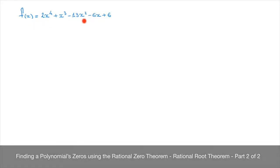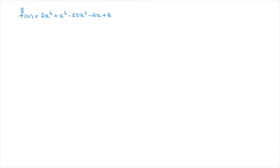Say we're given the polynomial function f(x) = 2x⁴ + x³ - 13x² - 6x + 6, and that we're asked to find its roots or zeros. To do that, I follow the same two-step method that I used in the previous example.